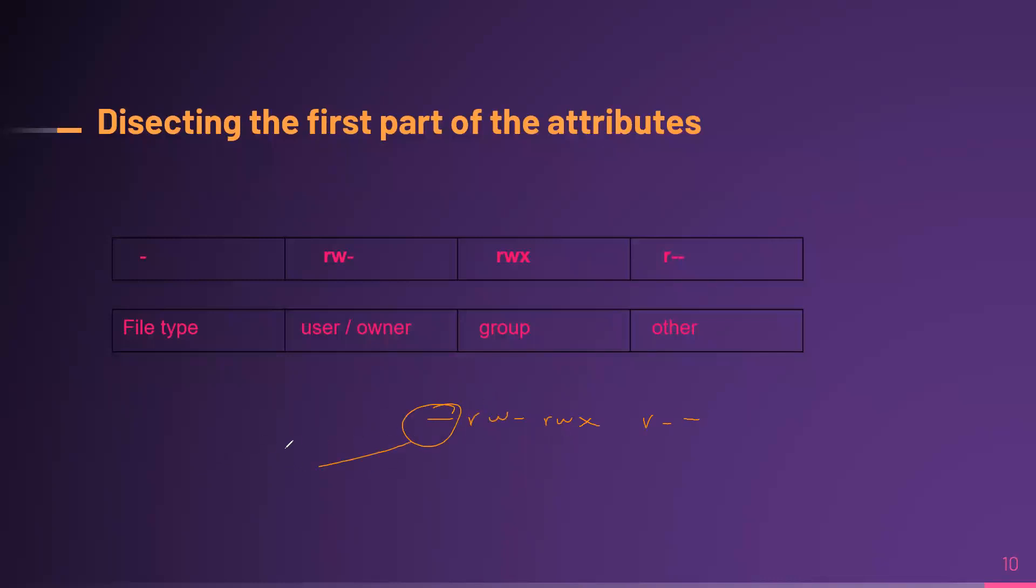I mentioned earlier that the first one will signify the file type, we'll look at what that means very soon. But the next three will signify what we call the first kind of user, which is the first permission level.